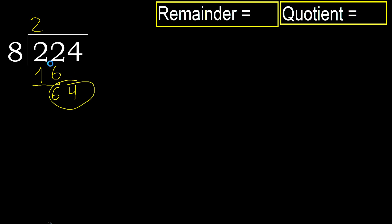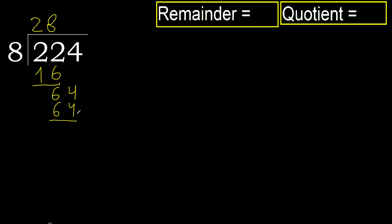64. 8 multiplied by 9 is greater. Try multiplied by 8: 64 is not greater. Subtract — remainder is 0. There is no next digit, therefore finish.